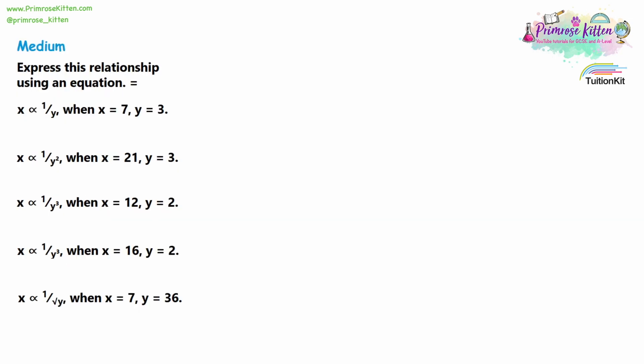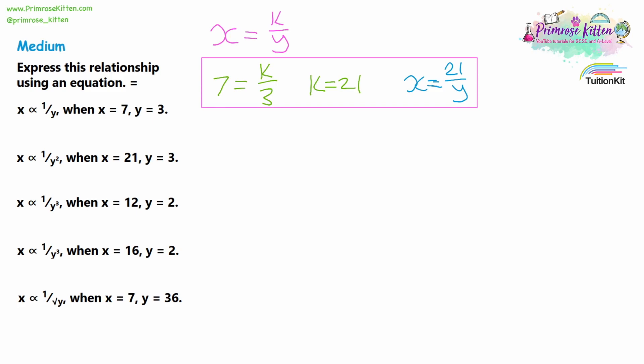Moving on to the medium questions, sometimes you just have to find the equation. When x is inversely proportional to y, that equation is x equals k over y. For medium question 1, we have two clues: x equals 7 and y equals 3. We multiply by 3 to get k, and 7 times 3 is 21. So our final equation is x equals 21 over y. It's important to note that x and y are not fixed at 7 and 3 — the only constant is k, which is 21.